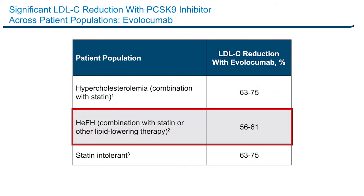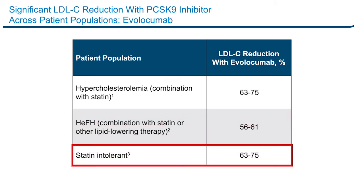Another population of interest is patients with familial hypercholesterolemia. Typically these patients do have a mutation in the LDL receptor, so they're very hard to get their LDL cholesterol down, even with statin therapy. But in patients who are heterozygotes for familial hypercholesterolemia — one working gene and one defective gene — the PCSK9 inhibitors are still quite efficacious, again lowering LDL cholesterol by about 60% or so. The last clinical population of interest are patients who are statin intolerant, typically due to muscle side effects.